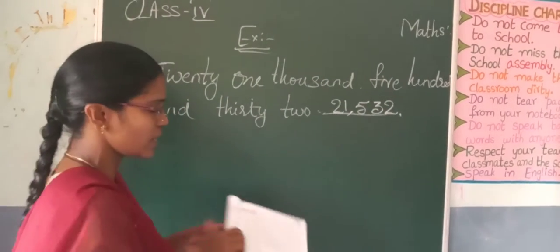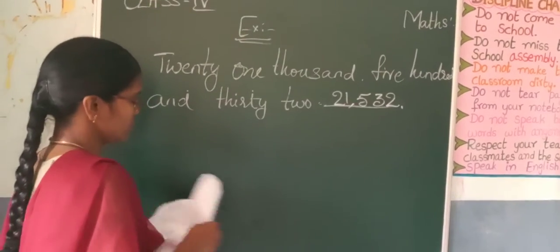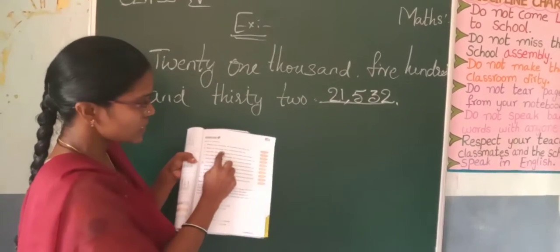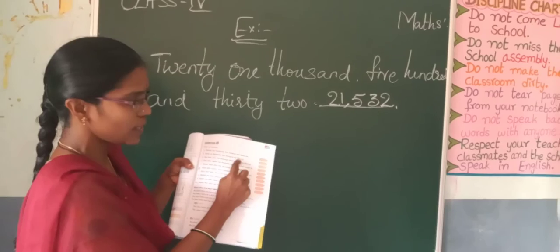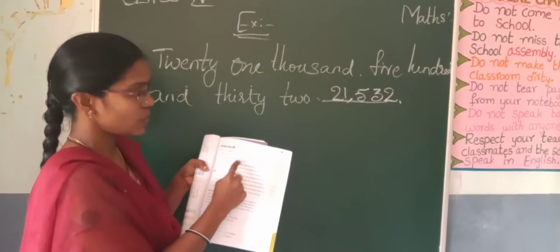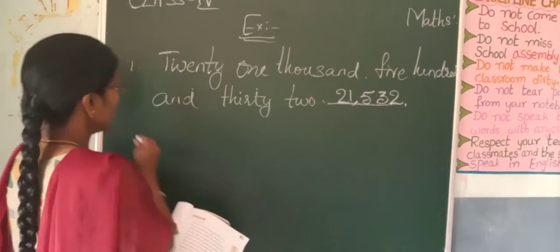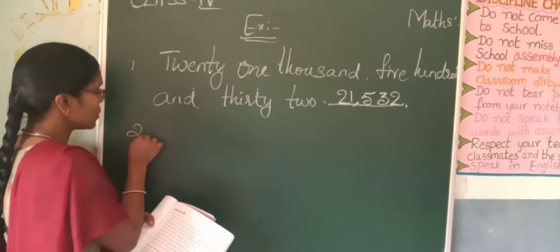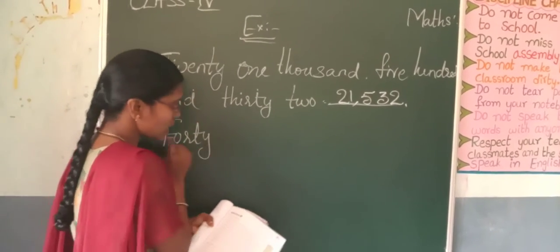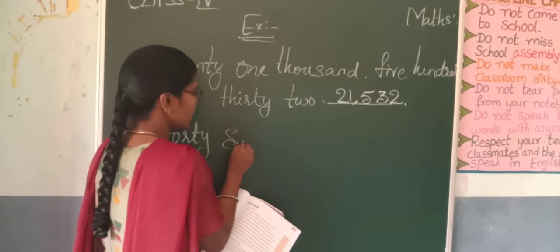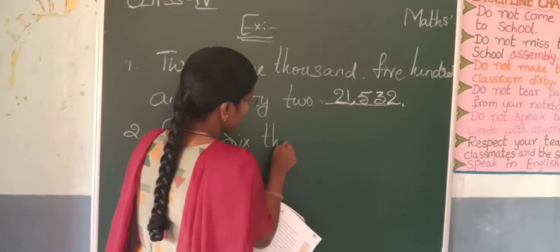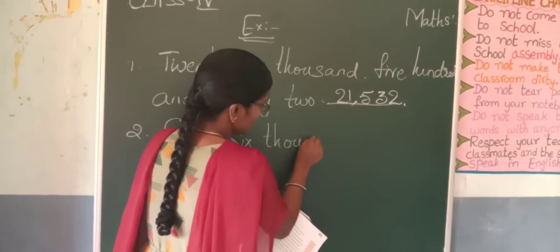Okay students, now see the second one. 46,251 — he's given for you. You have to mention this one in the classbook also. Don't forget the next one — two methods — you have to write in the classbook also.